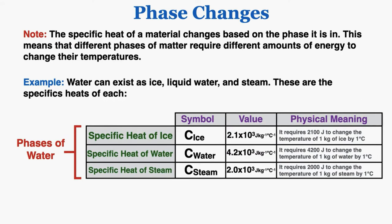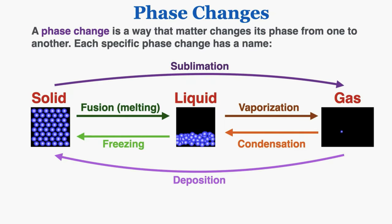One last thing to note: the specific heat of a material changes based on the phase it's in, meaning different phases require different amounts of energy to change their temperatures. Water can exist as ice, liquid, and steam, and these are the specific heats of each: ice has a specific heat of 2,100 J/kg°C, liquid water has 4,200 J/kg°C, and steam has 2,000 J/kg°C. That's the basics of what you need to know about phase changes. In the next lecture we'll learn a new equation to understand exactly how much energy is required for a material to undergo each specific phase change.